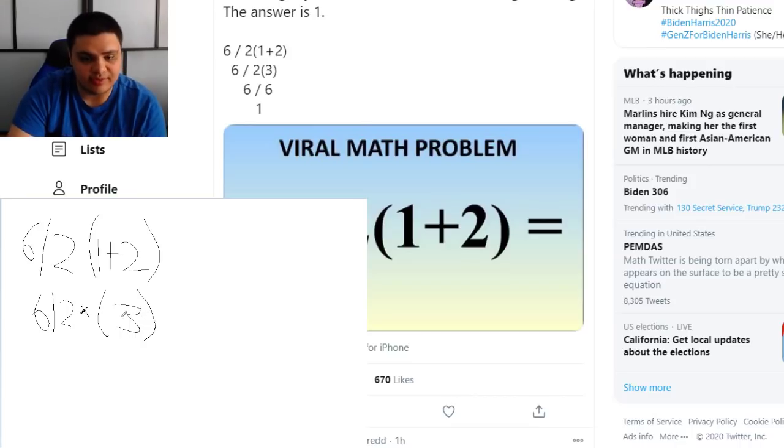So you go from left to right. So that means you first do 6 ÷ 2, which is 3, then you multiply that 3 by 3, which gives you the answer of nine.